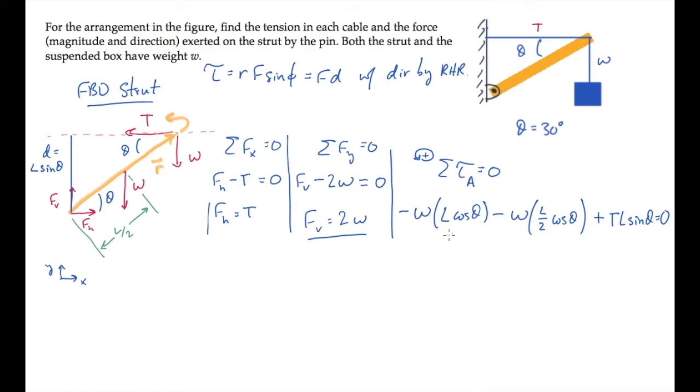We can solve this for the tension T, finding that it equals 3 times the weight W over 2 tangent of theta. When you substitute theta equals 30 degrees, you find the tension is 2.6 times the weight. So I'll add that number up here.